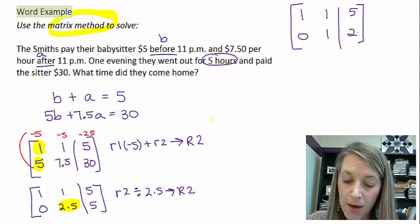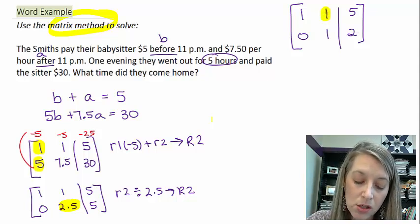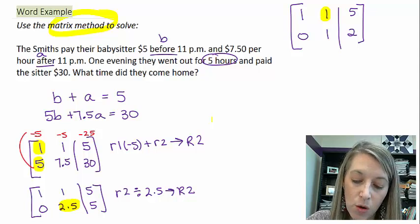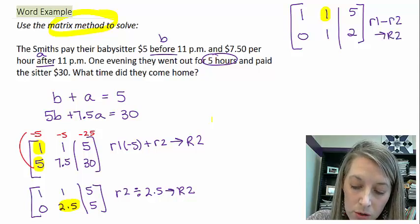I can stop here. That's my REF method. Or I can go one extra step to get my 0 up there. So this one seems pretty easy. Might as well go for it. I'm going to take row 1, and I'm going to subtract row 2. That goes into my new row 2.